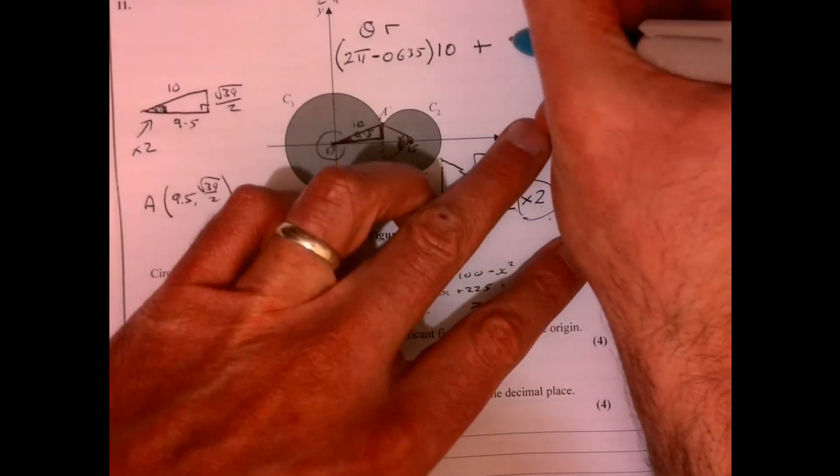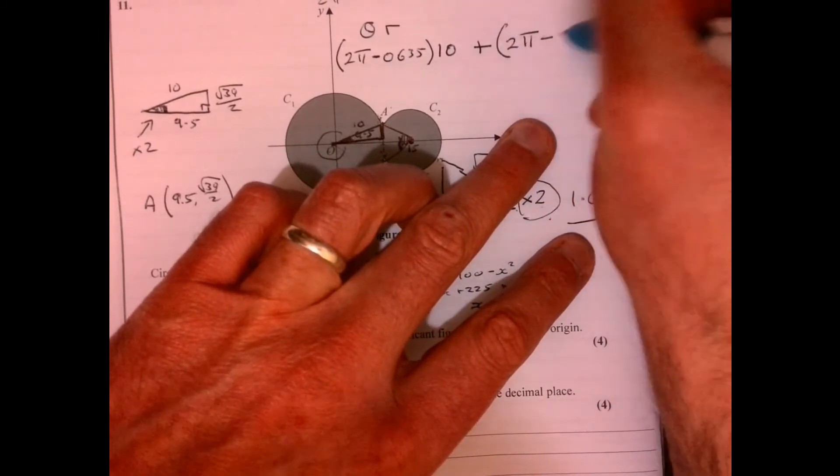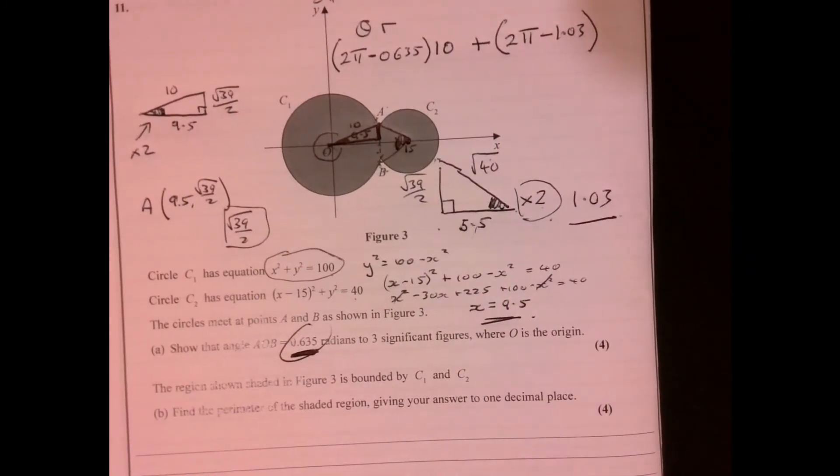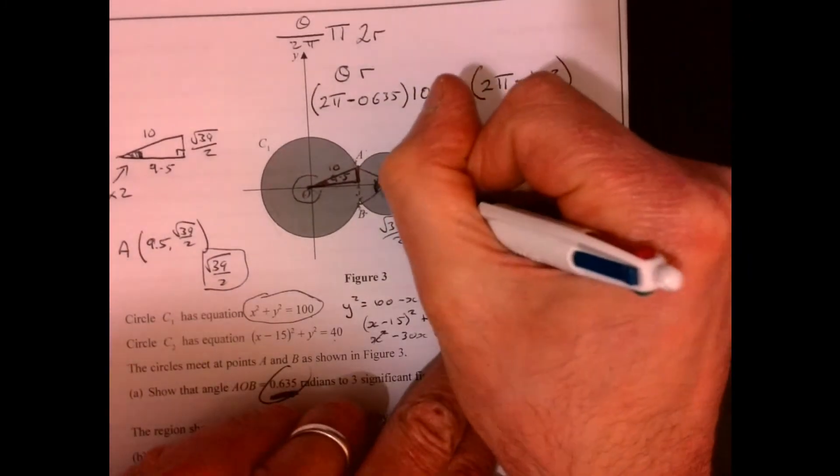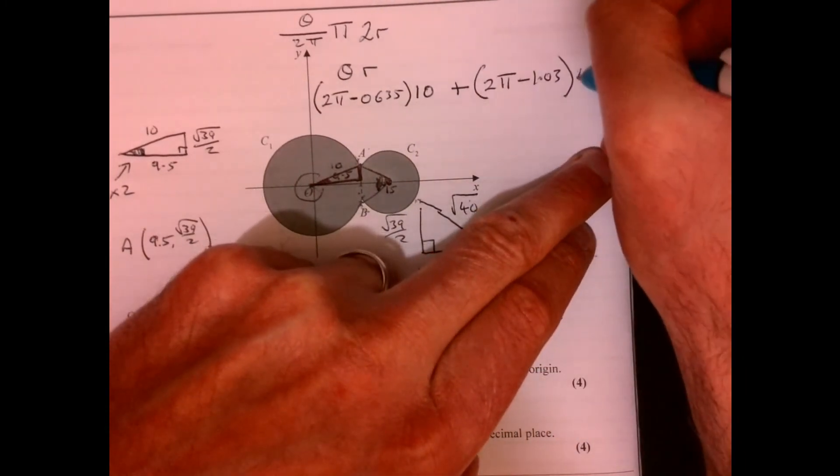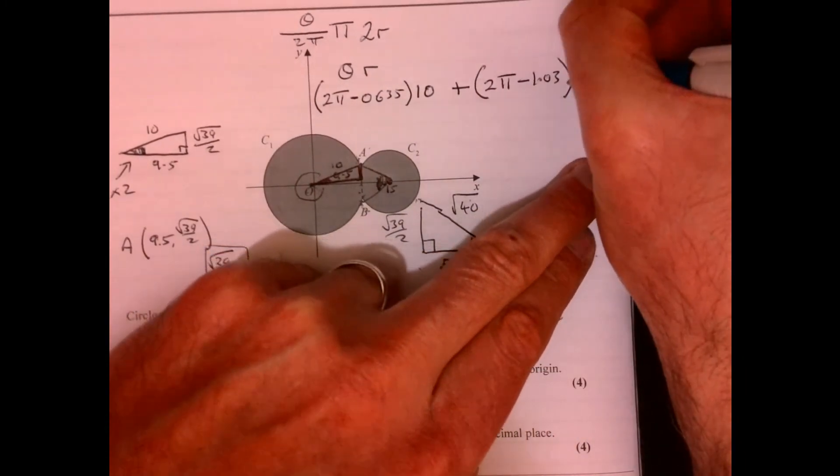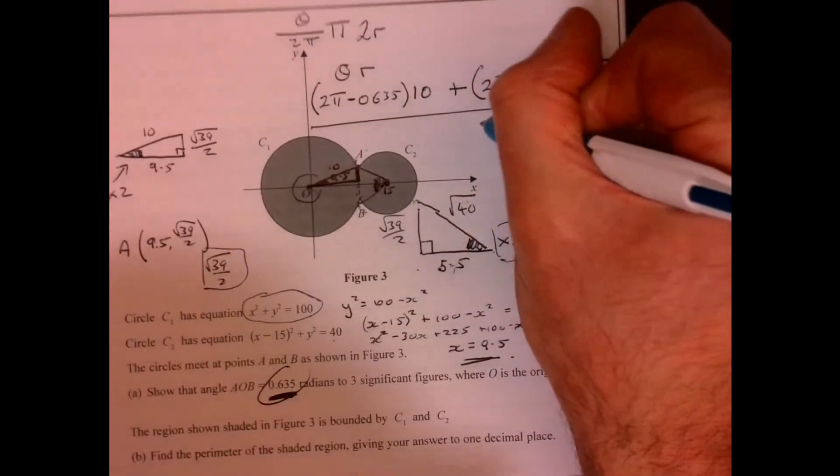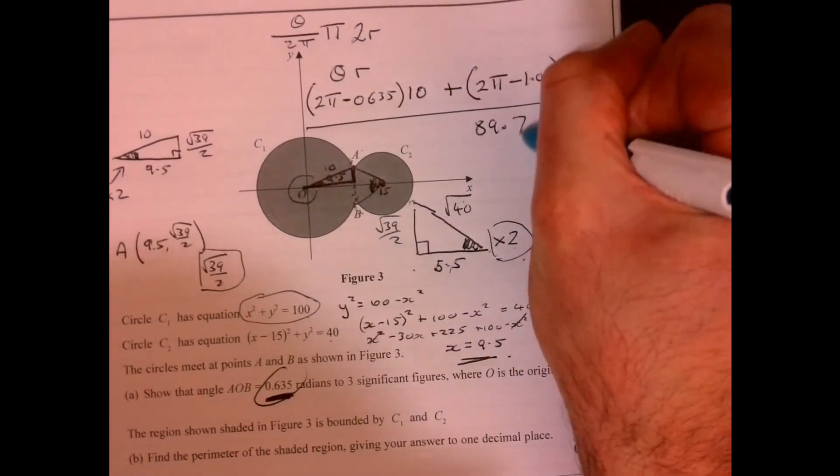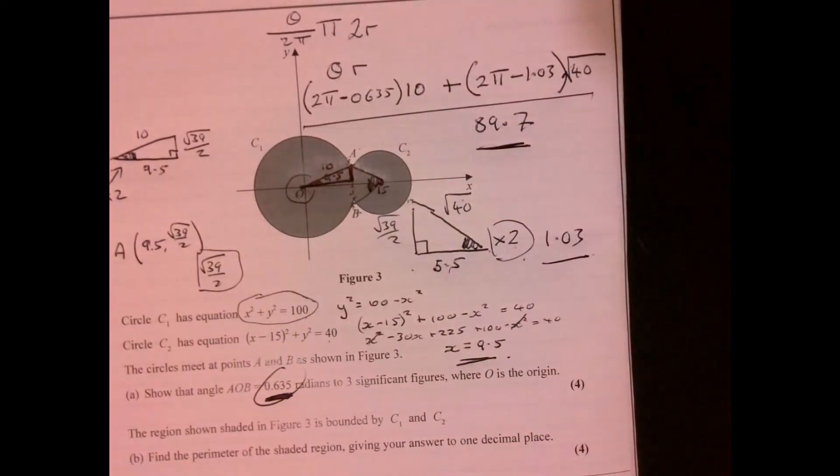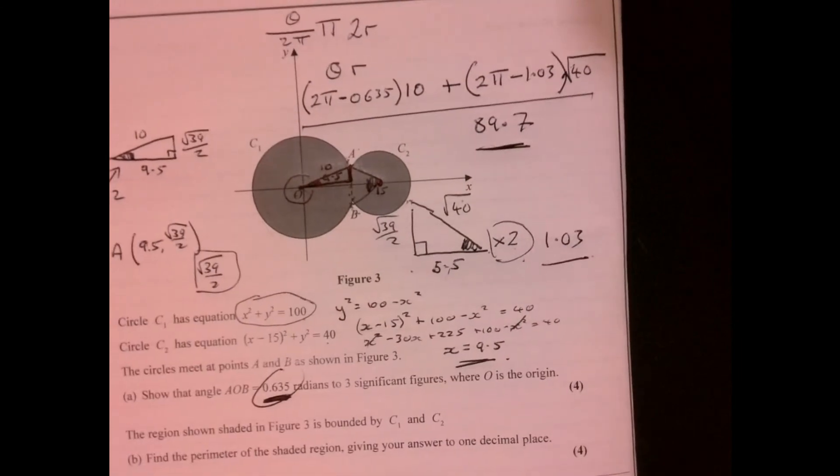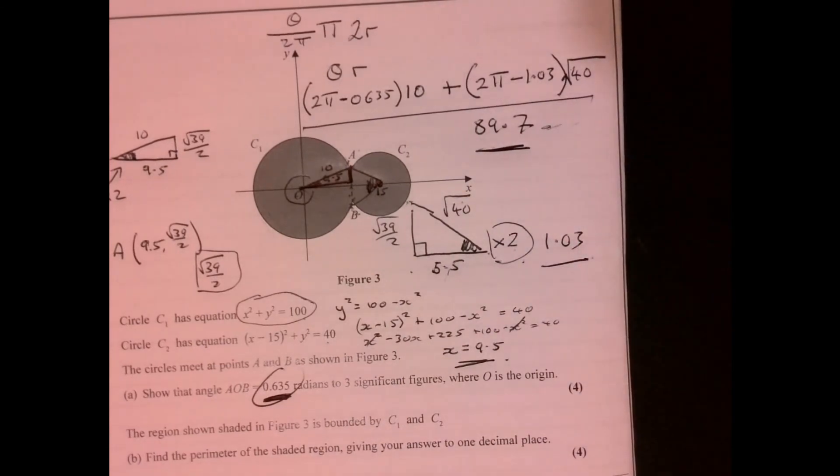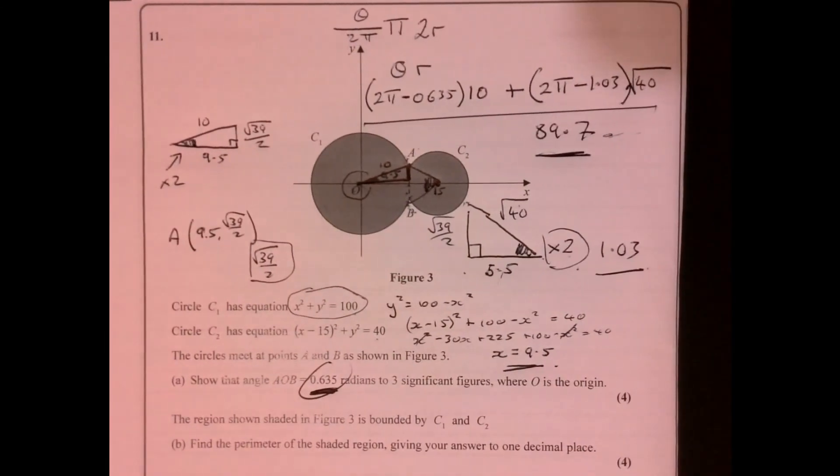If you do that, you end up getting 1.03, so that's that bit there. So it will be 2 pi take away 1.03 multiplied by the radius, and the radius here, remember, is root 40. Okay, plug all of that lot in and then you should get 89.7. Now we're talking about just units, okay. We don't know if it's centimeters or anything, so you're not going to lose any marks there, but if you want to put units in there you can write units. All right, well there you are, question 11, all done.